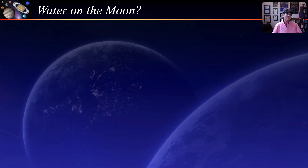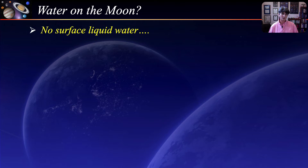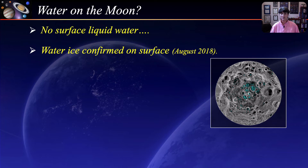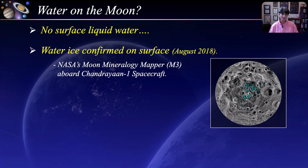Is there water on the Moon? Liquid water cannot persist on the Moon's surface because it would evaporate due to the lack of a lunar atmosphere. However, since the 1960s scientists conjectured that water ice could survive on the surface. In August of 2018, water ice was confirmed to exist. This image shows the distribution of water ice at the Moon's south pole, concentrated in very dark and cold craters. This is the first time scientists directly observed definitive evidence of water ice on the Moon's surface, confirmed by NASA scientists analyzing data from the Moon Mineralogy Mapper instrument aboard the Chandrayaan-1 spacecraft launched in 2008 by the Indian Space Research Organization.